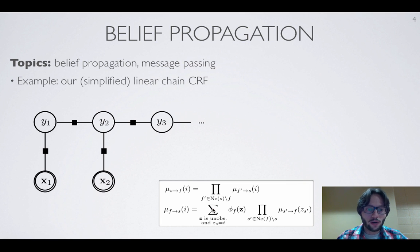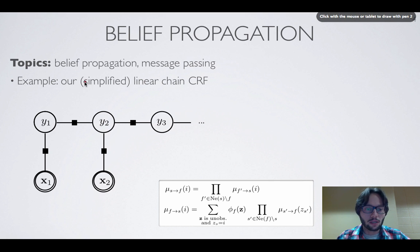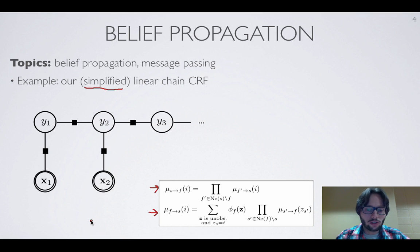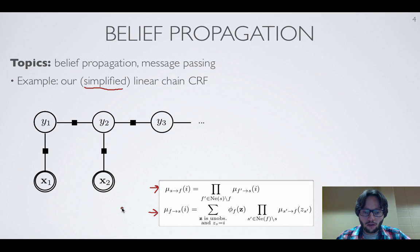To make this more concrete, we'll do the specific case of a simplified linear chain CRF without a context window, where y1 is connected to x1 and y2 only to x2. Here we have our equations for the messages, and we'll compute a few iterations going from left to right. Initially, all messages are set to one — that's the standard starting condition.